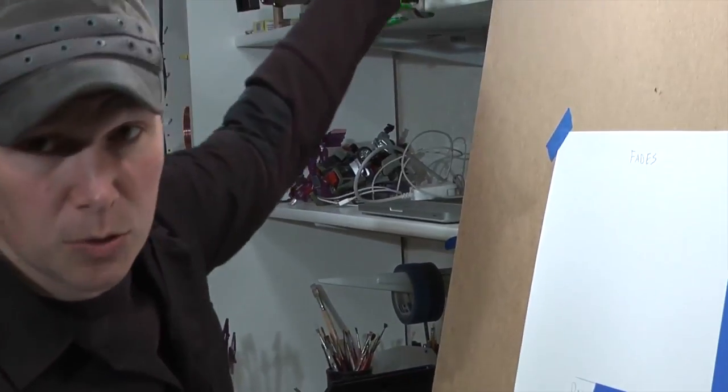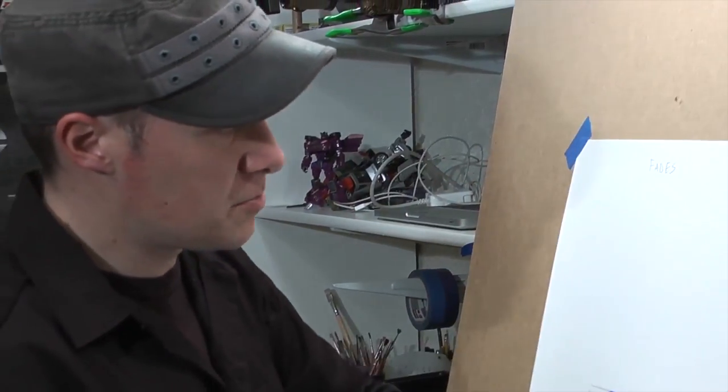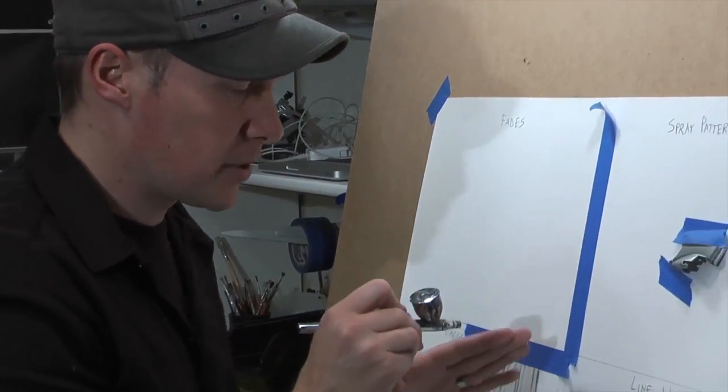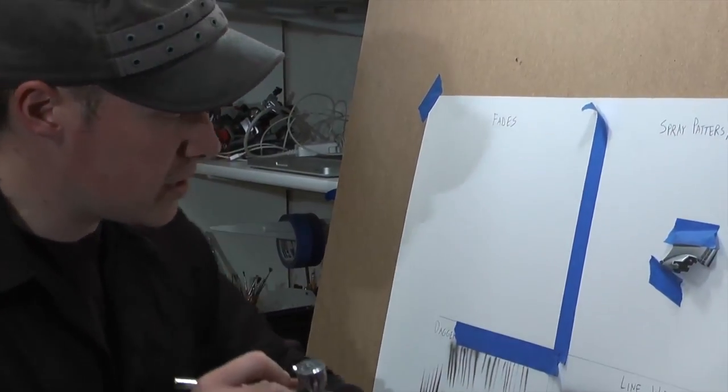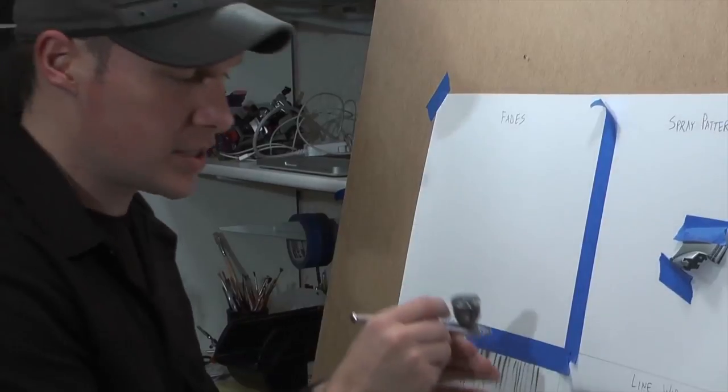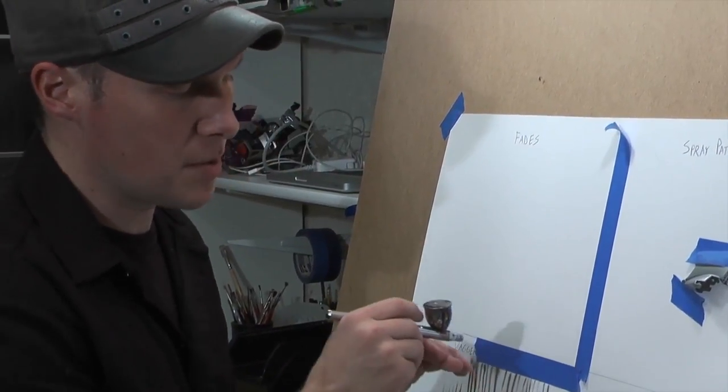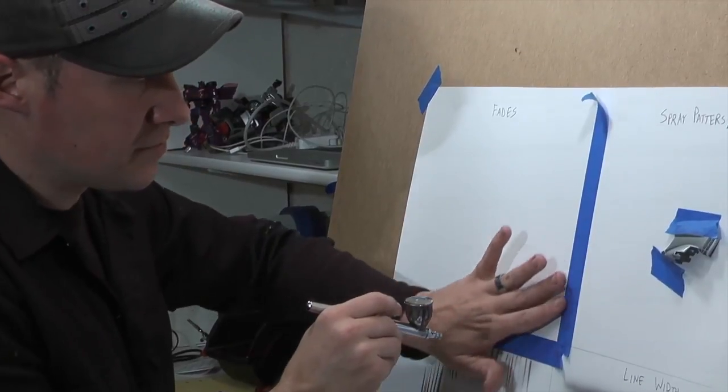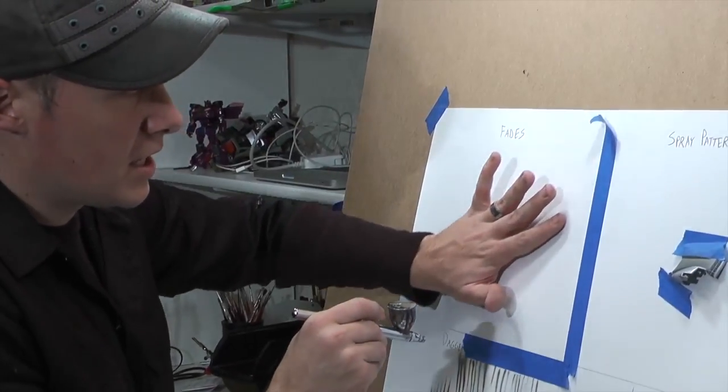Let's say our light source is coming from this angle, which would mean this is going to be much darker than here. So again: line control, what we learned here. Pushing down for air, pulling back for paint. We can get darker and we're going to fade to lighter and lighter.